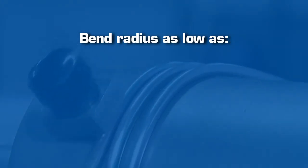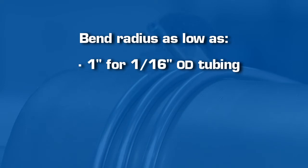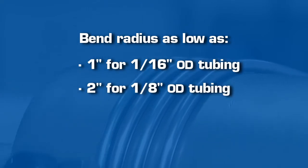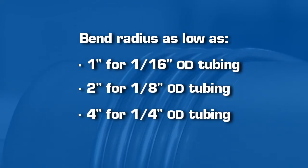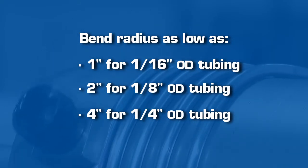All silcoed parts have a recommended bend radius to maintain optimal coating density. Bend radius is as low as 1 inch for 1/16th inch OD tubing and should be increased to 4 inches for 1/4 inch OD tubing.